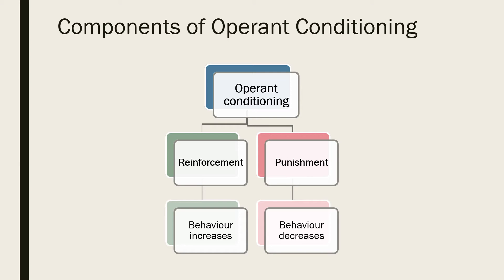There are several key concepts in operant conditioning. Reinforcement is any event that strengthens or increases the behaviour it follows. Punishment is defined as the opposite of reinforcement, since it is designed to weaken or eliminate a response rather than increase it.